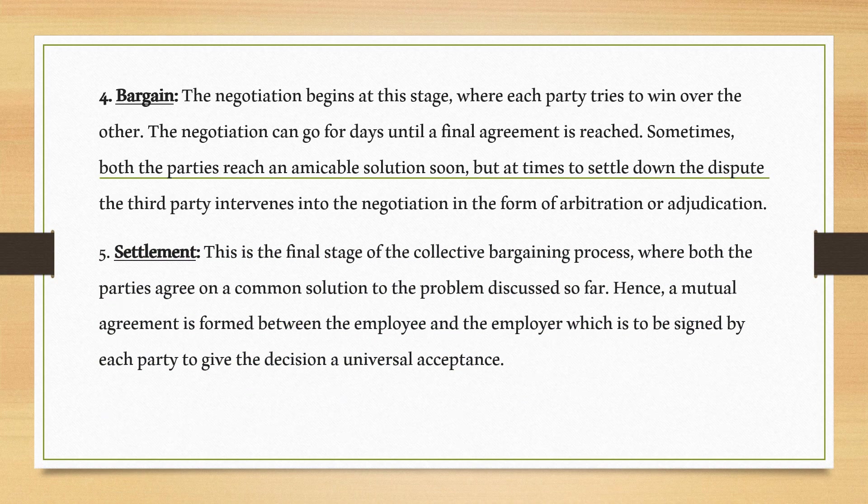The fifth step is settlement. This is the final stage of the collective bargaining process where both parties agree on a common solution to the problem discussed. A mutual agreement is formed between the employee and employer, which is signed by each party. The final decision is placed before both parties and accepted universally. This completes the procedure of collective bargaining.